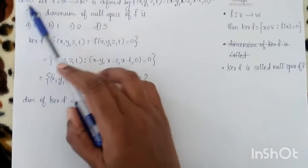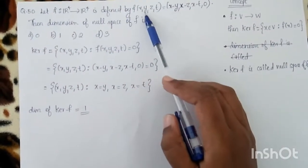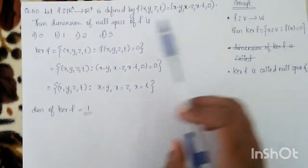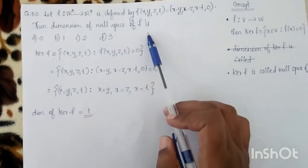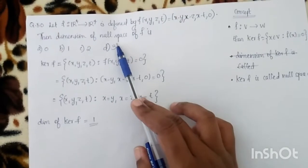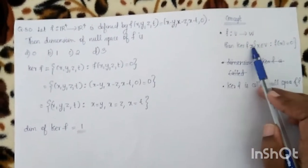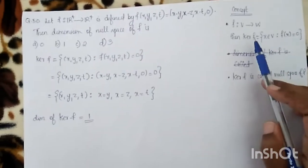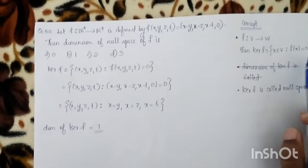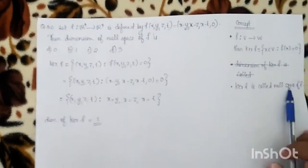Next, question 50: Let f from R⁴ to R⁴ be defined by f(x,y,z,t) = (x-y, x-z, x-t, 0). Find the dimension of the null space of f. We use the concept: for a linear transformation f from V to W, the kernel of f is the null space of f — that is, the set of all points in V such that f(x)=0.